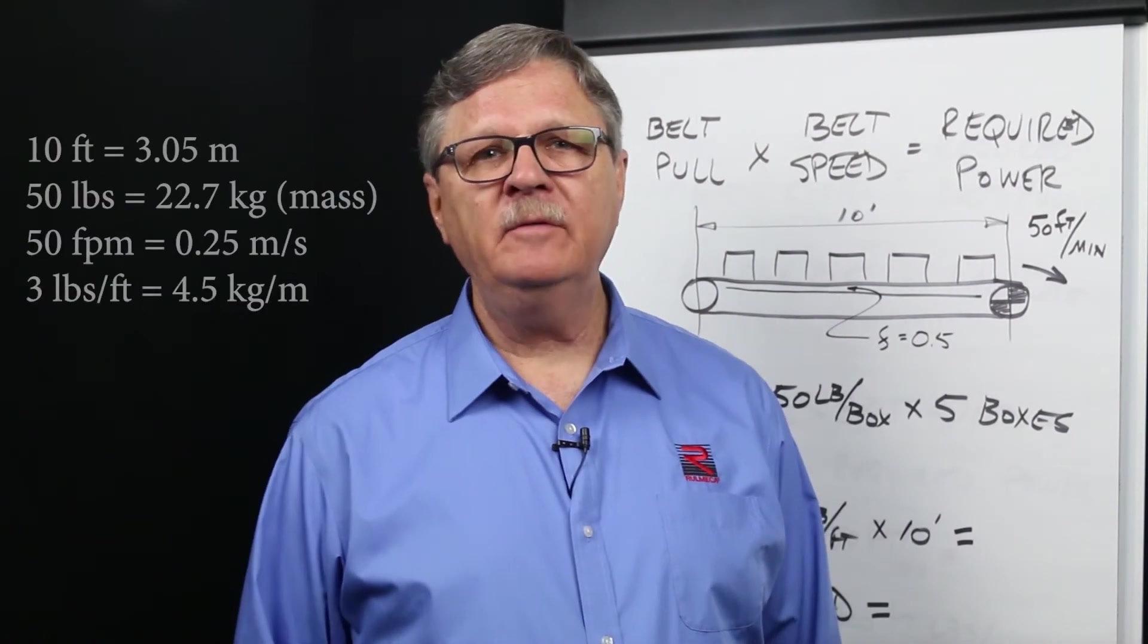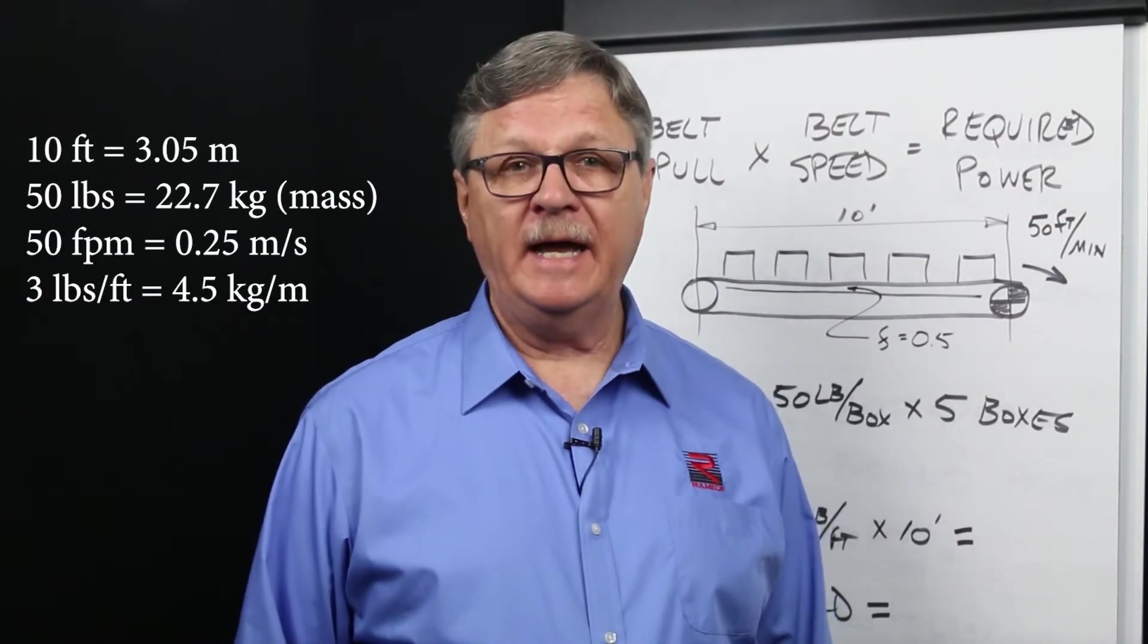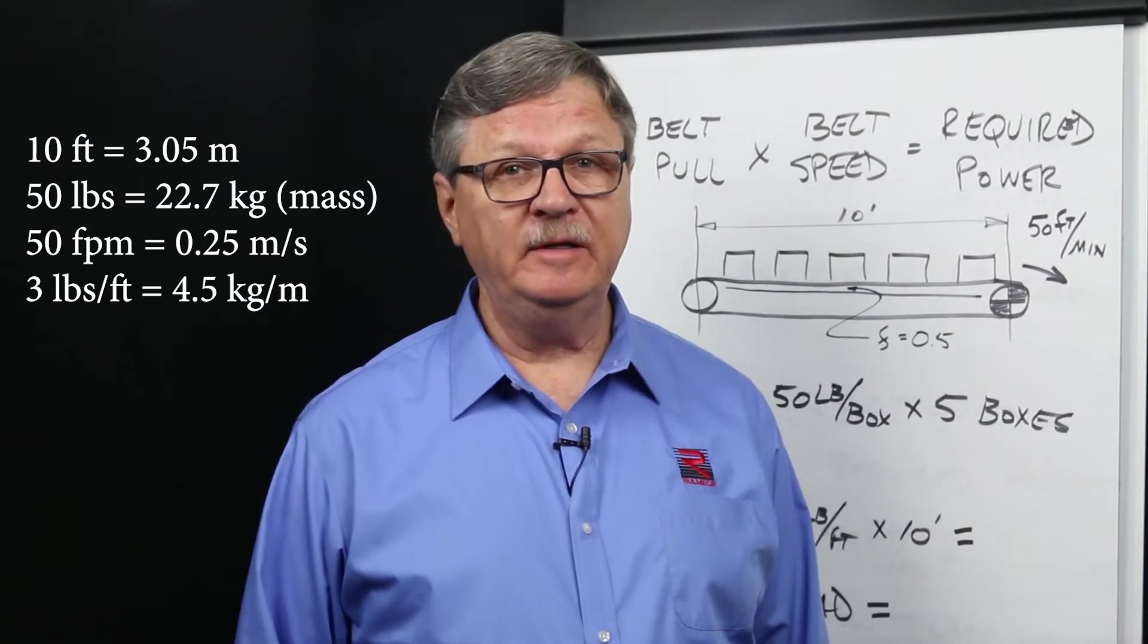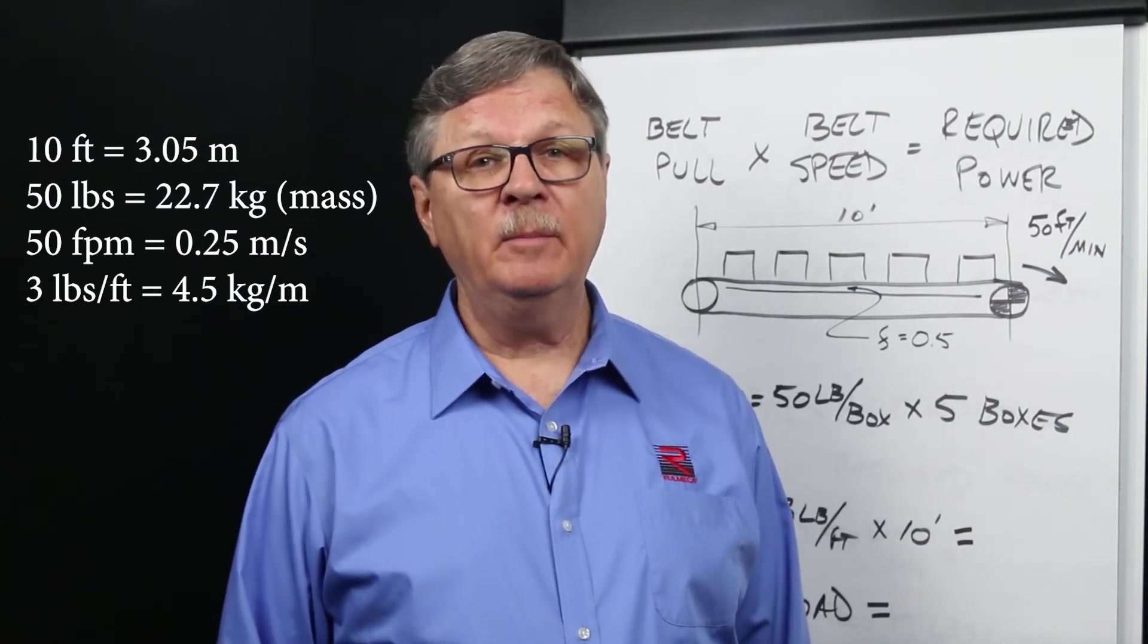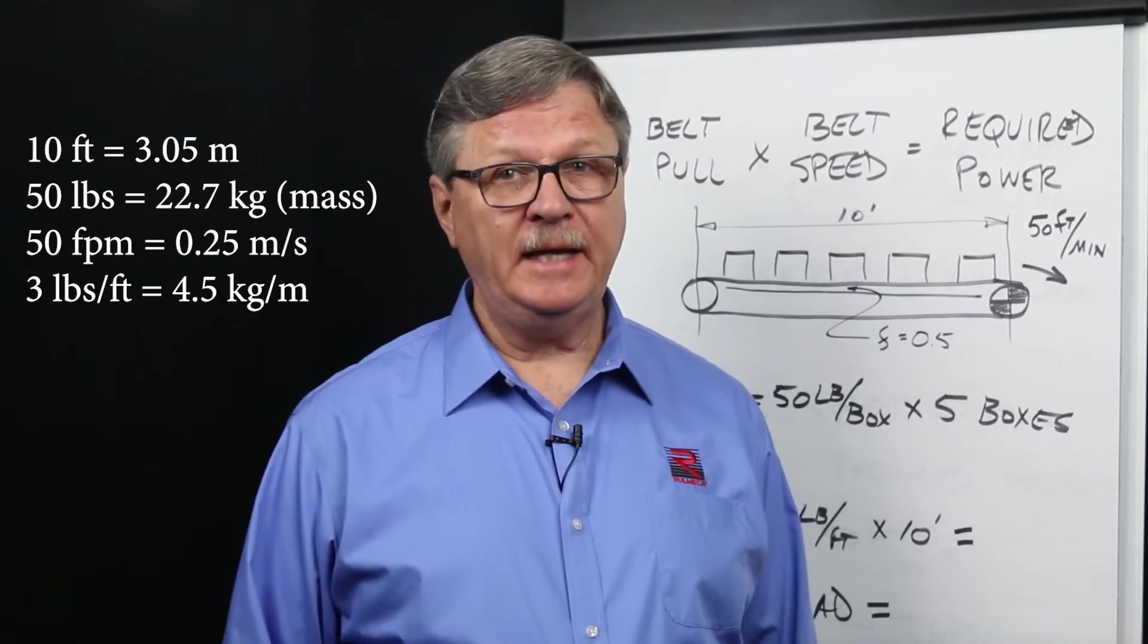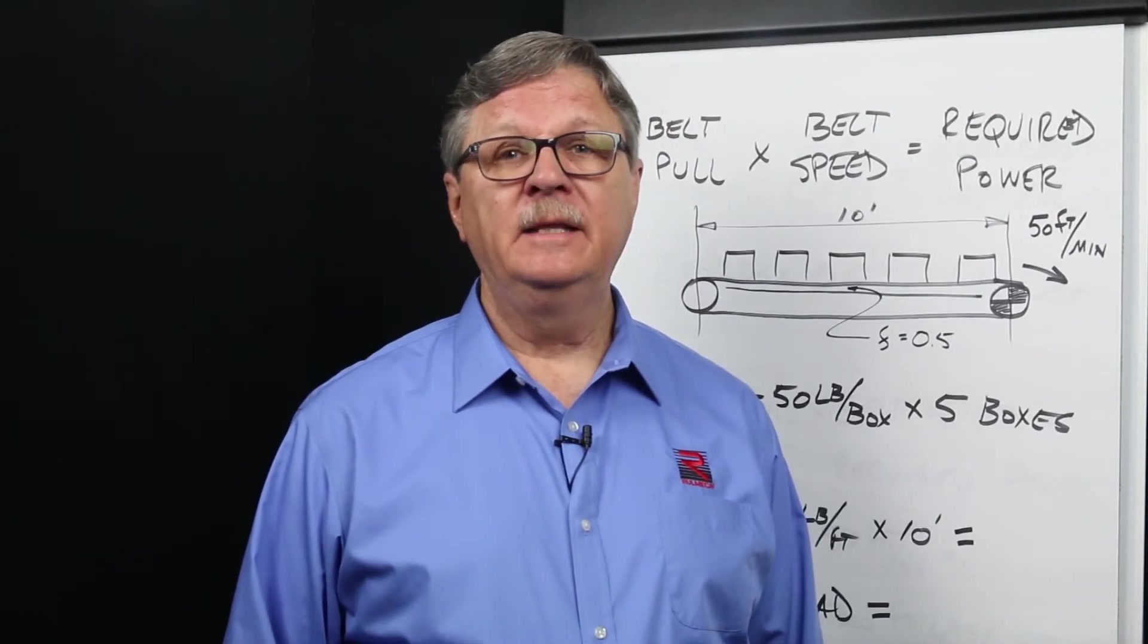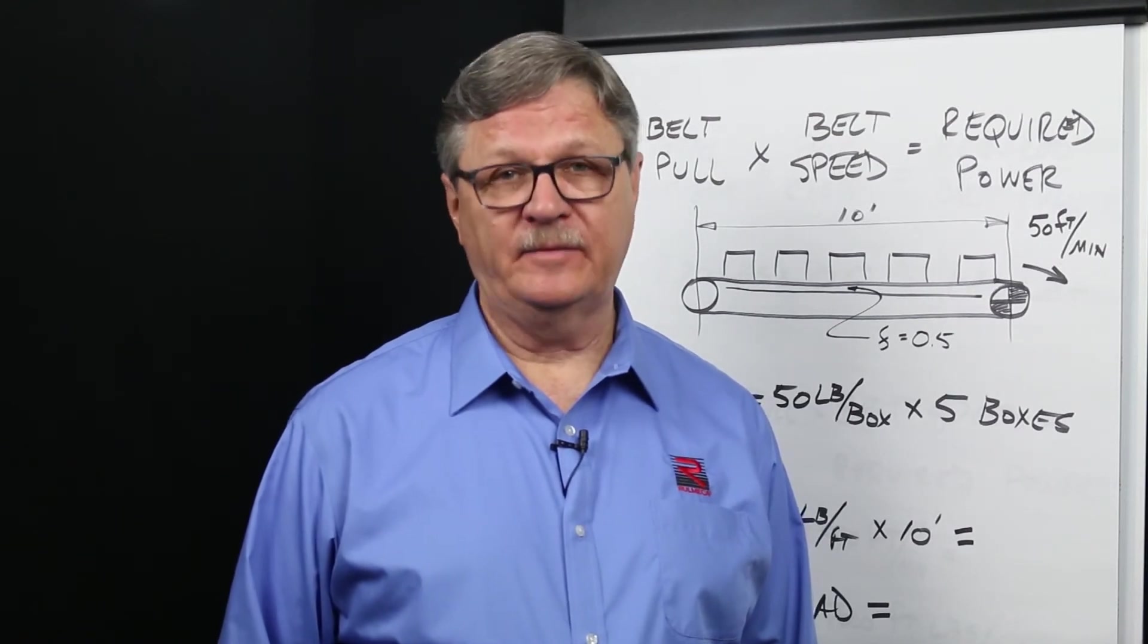For example, if a 10-foot long conveyor moves five 50-pound boxes simultaneously at a belt speed of 50 feet per minute, on a conveyor belt with a weight of 3 pounds per foot, on a slider bed with a frictional coefficient of 0.5, then the belt pull is calculated as follows.